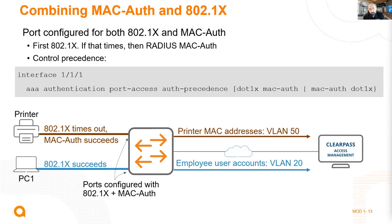Combining dot1x and MAC authentication: the first method is tried; if it doesn't work, the timeout is applied per the authentication configuration, then the other method is tried. You have flexibility - you can rigidly assign specific ports only for printers with MAC authentication, or apply both authentication methods on every single interface so anyone can connect to any interface.